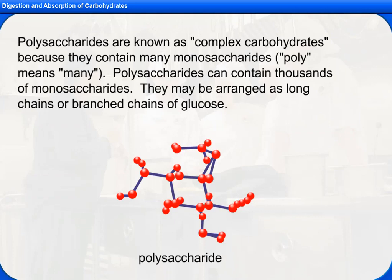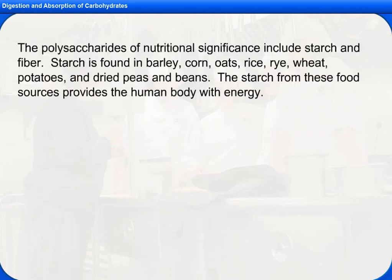Polysaccharides are known as complex carbohydrates because they contain many monosaccharides — poly means many. Polysaccharides can contain thousands of monosaccharides and may be arranged as long chains or branch chains of glucose. Starch is found in barley, corn, oats, rice, rye, wheat, potatoes, and dried peas and beans.